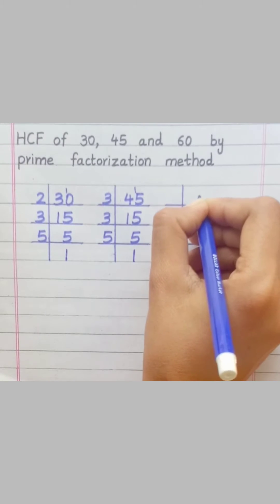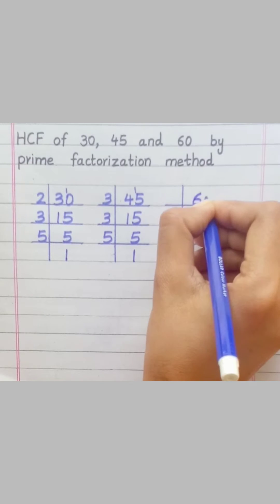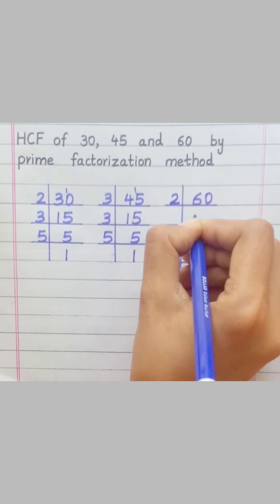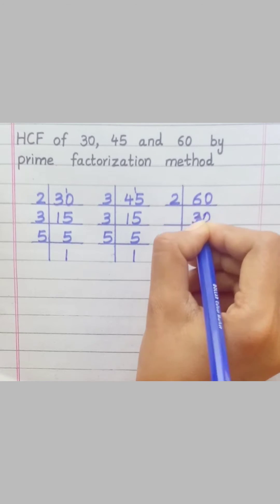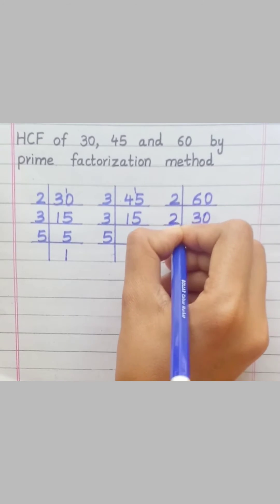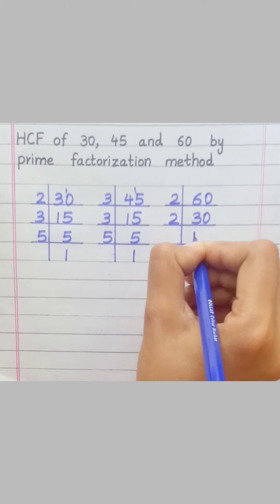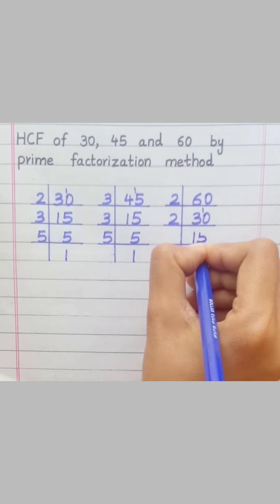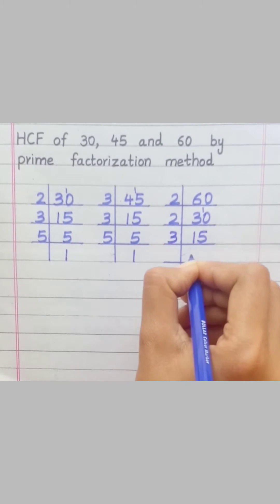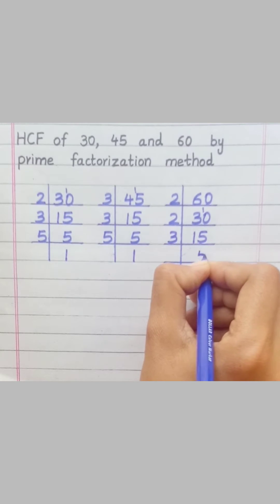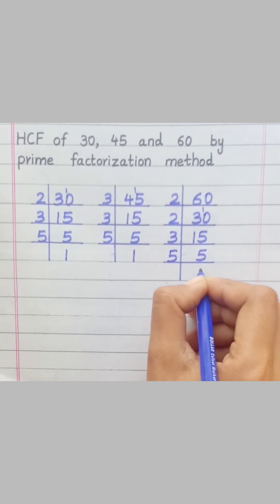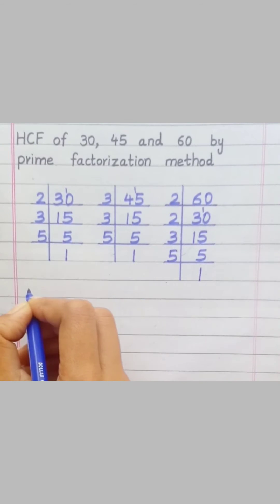60: 2 threes are 6, 2 zeros are 0, 2 ones are 2, 2 fives are 10, 3 fives are 15, 5 ones are 5.